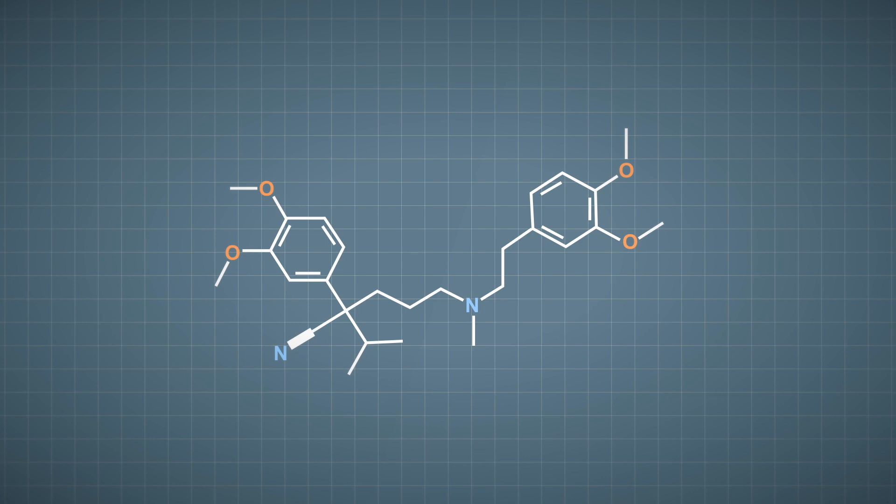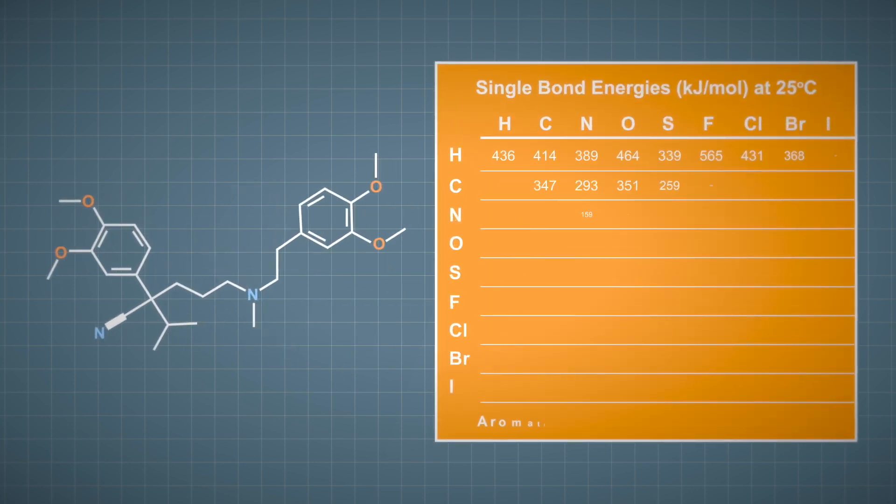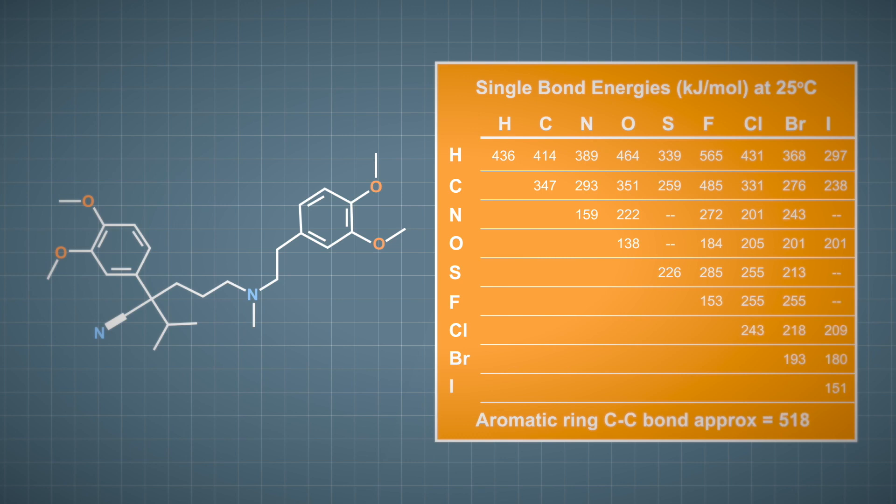However, not all bonds are equal. We can estimate the strength of each bond in this molecule and therefore how easy or likely it is for it to break by looking at a bond energy table like this. By comparing the energies of the various bonds, we can suggest that the bond most likely to break is the nitrogen-carbon bond here, followed by the carbon-carbon bond, and then the carbon-oxygen bond.